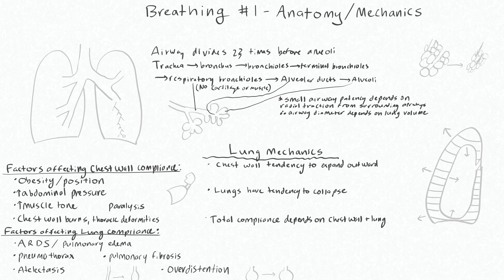Since there's no rigid support of these small airways, the patency of them depends on radial traction and negative pressure from surrounding airways. So we can make the statement that airway diameter depends on lung volume. The intrapleural space around here will be negative pressure, and this pressure is expanding the alveoli. The alveoli actually share walls with these small airways, so when you have expanded alveoli, this radial traction will end up pulling the small airway open.